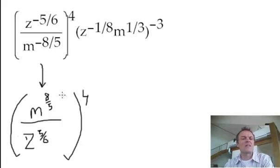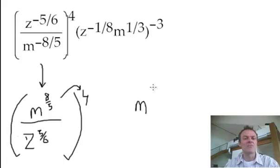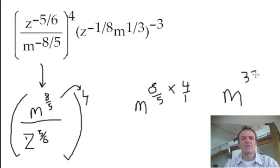So, remember, when you are raising anything to the power 4, this is where you multiply the exponents, OK? So this m, all right? Right now, it's got 8 fifths, but it's been multiplied by 4. So 4 over 1, that's 32 fifths. So we have m to the power 32 fifths, OK? That's the numerator. So remember, the m's now on the top. I made it a positive exponent. And I multiplied it by 4.